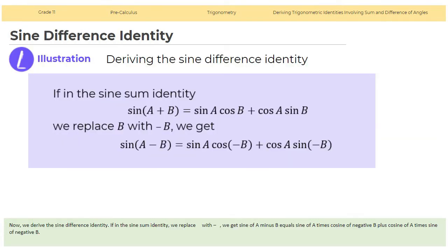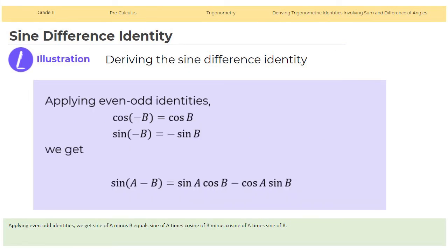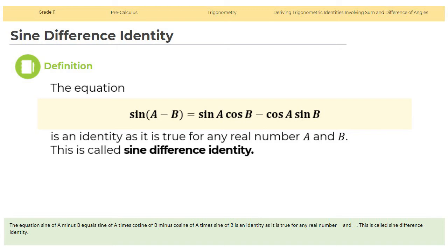Sine difference identity. In the sine sum identity, sine(a plus b) equals sine a cosine b plus cosine a sine b, we replace b with negative b. We get sine(a minus b) equals sine a times cosine(negative b) plus cosine a times sine(negative b). Applying even-odd identities, cosine(negative b) equals cosine b and sine(negative b) equals negative sine b. We get sine(a minus b) equals sine a cosine b minus cosine a sine b. This is called the sine difference identity.